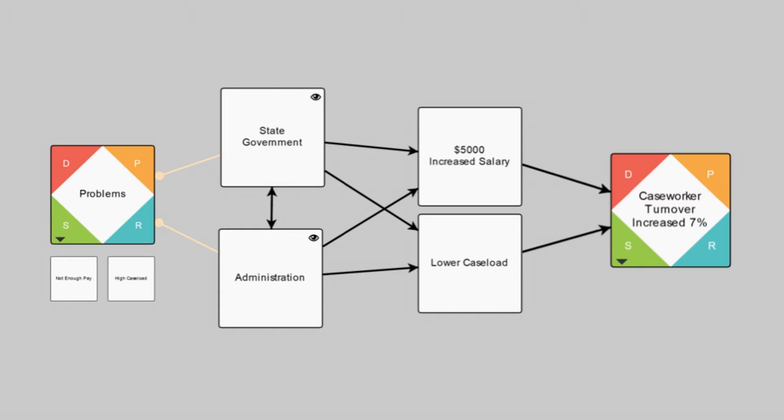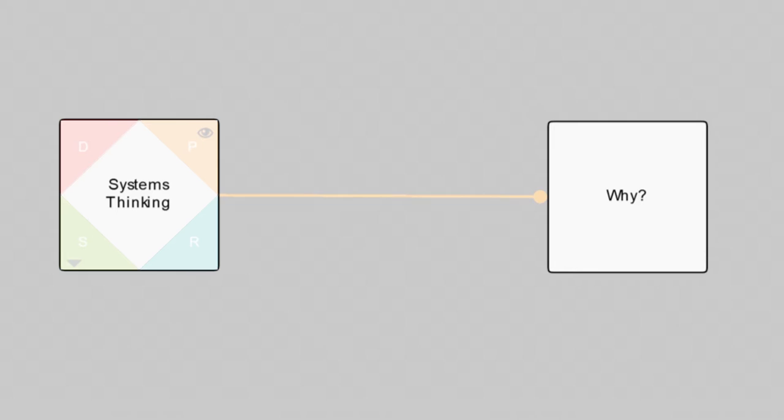So why? It's because the two solutions were not systemic. Systems thinking uses DSRP: distinctions, systems, relationships, and perspectives, which I'm sure you guys all know.